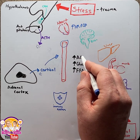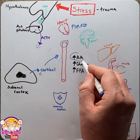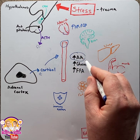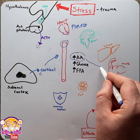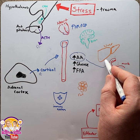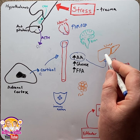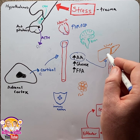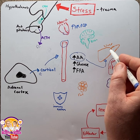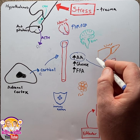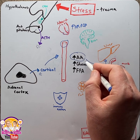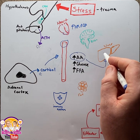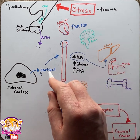Cortisol will increase the amount of free amino acids in the blood by diverting them away from muscle and into the liver. Here the liver will convert the amino acids into glucose and release them to increase glucose levels. This is known as gluconeogenesis.